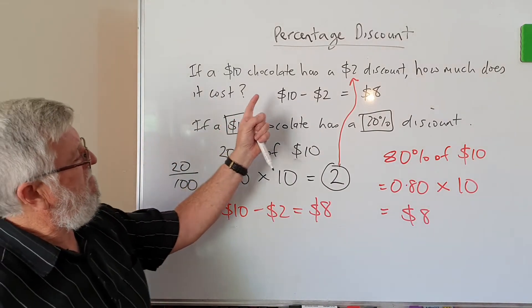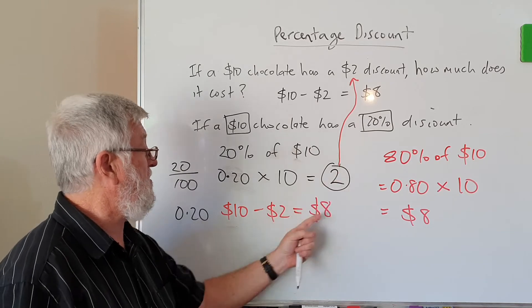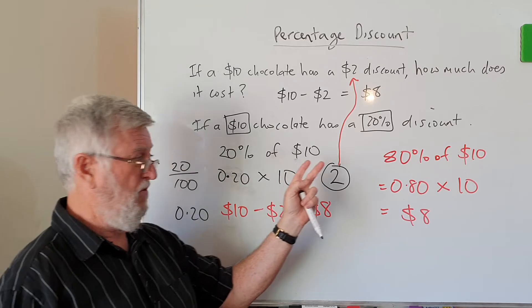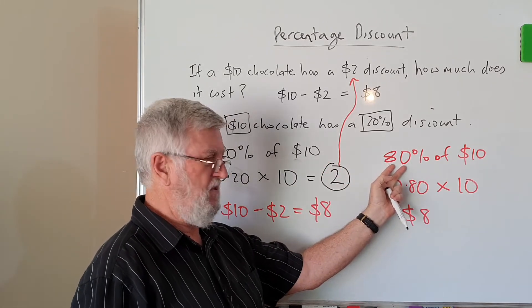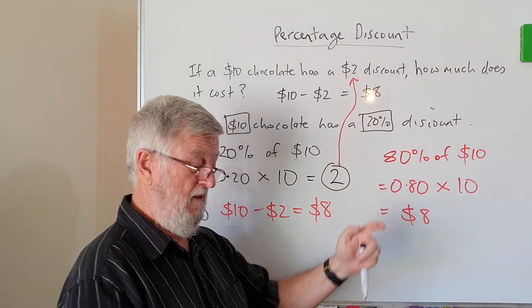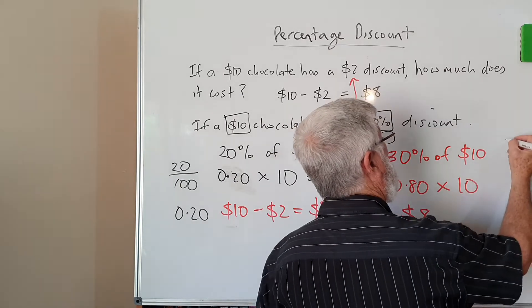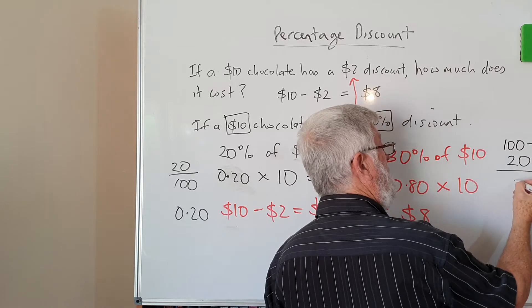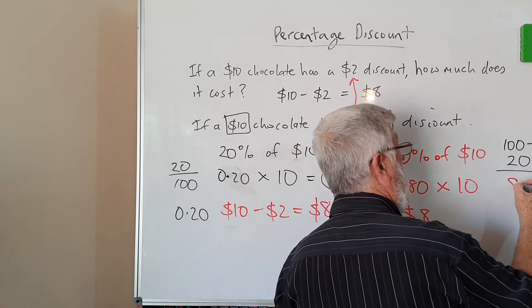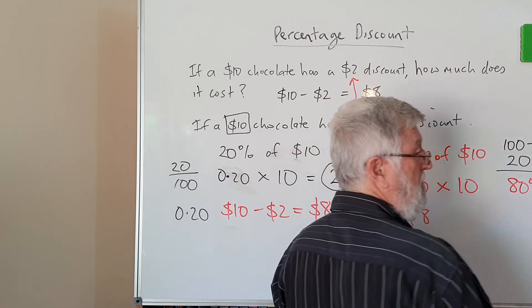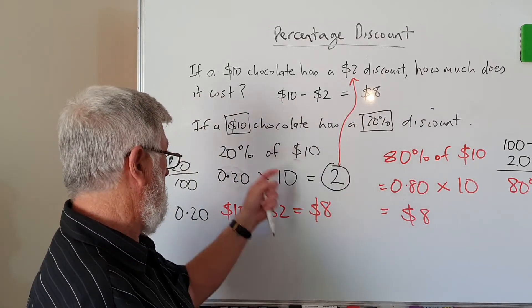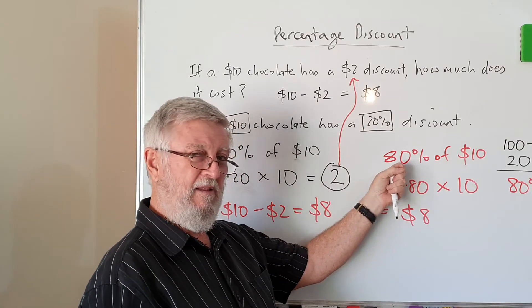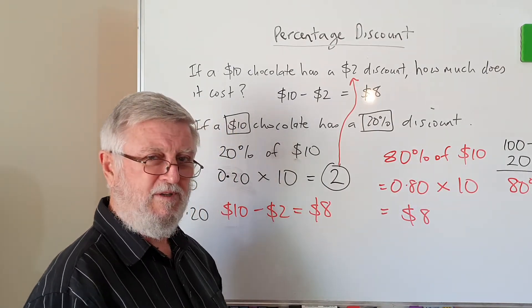And that gives us the $8 straight out. So if you're talking about discount, you can do it first as a calculation and then subtract it. If you're comfortable with it, for 20%, I can talk about why does it become 80%. It's actually this. Let's have a look at what we've got. We've got 100% and we know we're going to subtract 20%. What we're actually doing is we're actually getting 80%. So if you're more comfortable with that, 20% discount means you're actually calculating 80%.